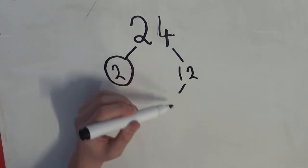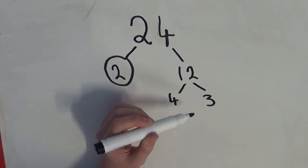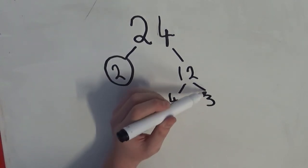But 12 on the other hand can be divisible by both 4 and 3. 3 is a prime number.